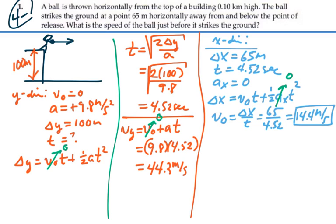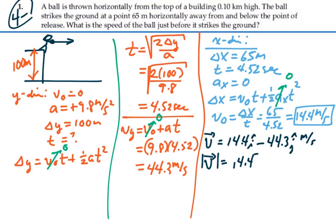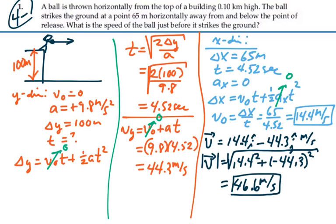So, our final velocity as a vector is going to equal 14.4i minus, if we're going in the negative y direction, 44.3j meters per second. Nice to know, but we want the magnitude of that, because we want the speed of the ball. So, the magnitude of our final vector is going to be 14.4 squared plus a negative 44.3 squared, all that square root. That's equal to 46.6 meters per second. So, that is the magnitude of our velocity when it hits the ground, 46.6 meters per second.